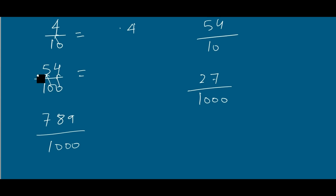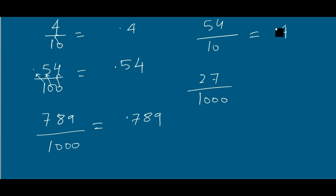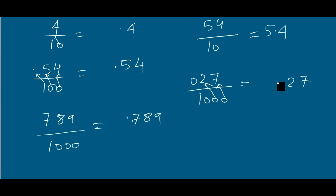For 54/100: with two zeros you get 0.54. For 789/1000: you write 0.789. For 54/10: instead of 0 you write 4 and instead of 1 you write a decimal, leaving 5, so it becomes 5.4. For 27/1000: instead of the zeros you write 2 and 7, and with nothing left for the last zero you add a zero, giving 0.027.